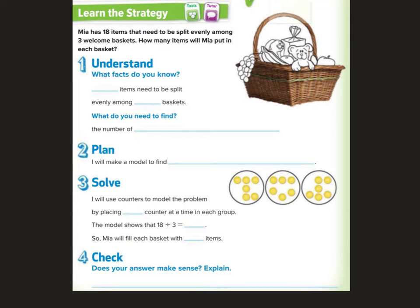Alright, so here it says Mia has 18 items that need to be split evenly among three welcome baskets. How many items will Mia put in each basket? So we have 18 total items and we need to divide them into three equal groups. The first question is, what do we need to know? 18 items split evenly among three baskets. What do you need to find? The number of items Mia will put in each basket.